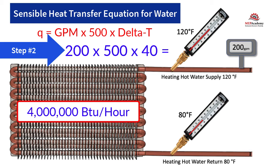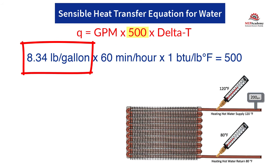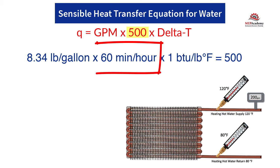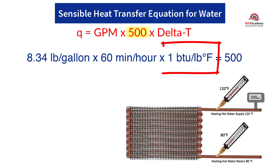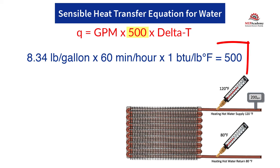Now we can quickly explain where the value of 500 in the calculation is derived from. First, we have the weight of water at 8.34 pounds per gallon. Then we have the conversion of minutes into hours. And lastly, the specific heat of water at 1 BTU per pound per degree Fahrenheit. This is what that looks like: 8.34 pounds per gallon times 60 minutes per hour times 1 BTU per pound per degree Fahrenheit equals 500.